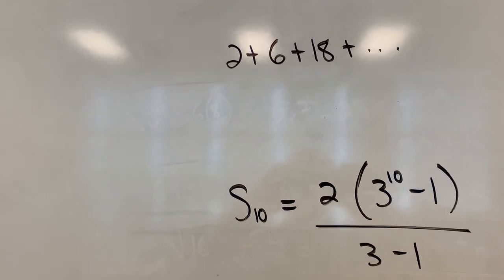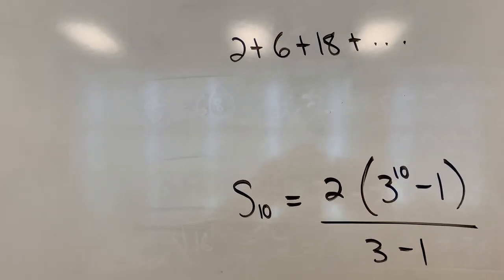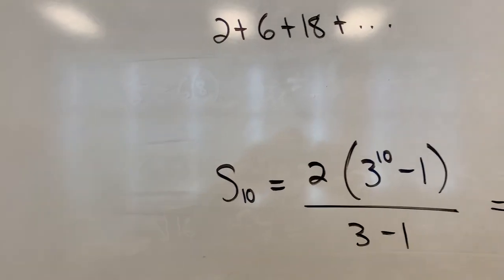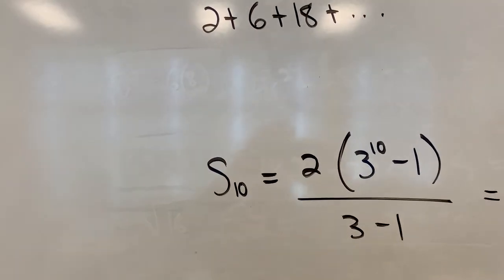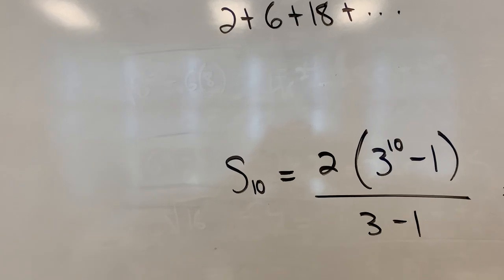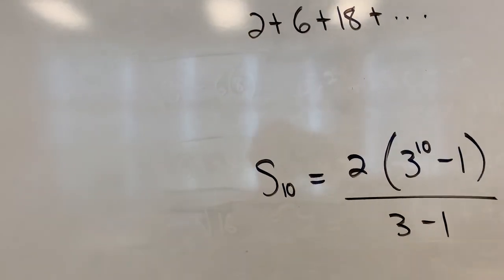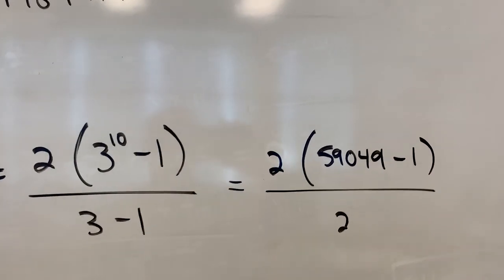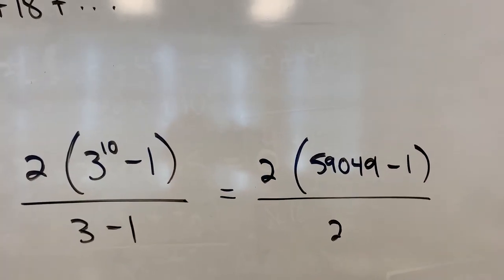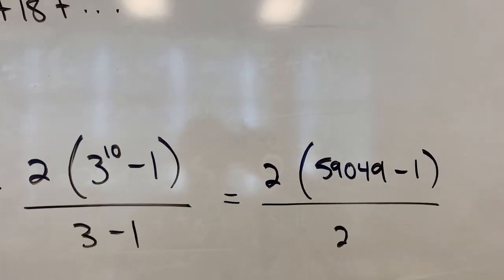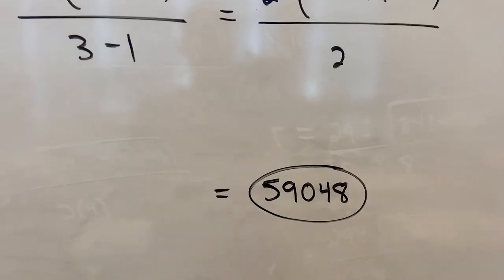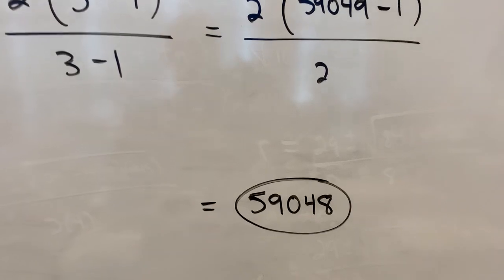I know the first term is 2. I know the common ratio is 3. I know that we're adding up 10 terms, and so I just substituted in the numbers. And now it becomes a basic math exercise, just making sure you do order of operations. So here comes the calculator. 3 to the 10 is this gigantic number. Subtract 1, you get 59,048. Multiply by 2, divide by 2. Those 2s cancel out.